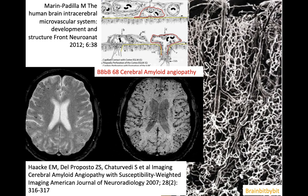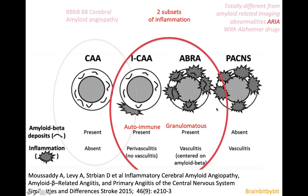In the previous brain bit by bit, I mentioned that in cerebral amyloid angiopathy there is involvement of the leptomeningeal, cortical, and subcortical vessels that are continuous and one network. In this amyloid angiopathy, there are two subsets of inflammation that can occur. The first one is inflammatory CAA.